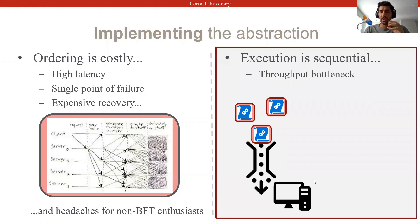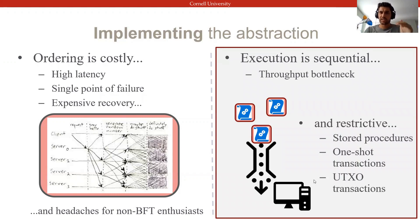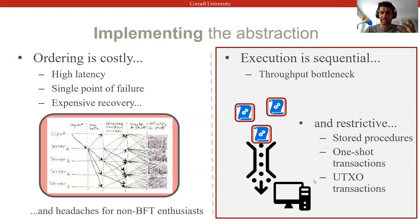On the other hand, while executing transactions sequentially is trivially safe and ACID-compliant, that can become an obvious throughput bottleneck. And to make matters worse, this kind of order-execute pattern usually forces us into the use of restrictive transaction models — stored procedures, one-shot transactions, or even UTXO models that database operators in practice don't actually use very much.